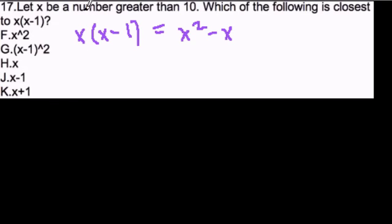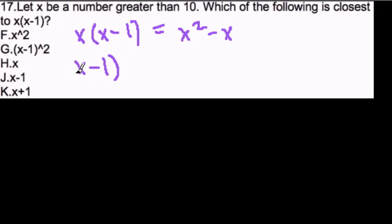Now if we look at our choices here, only one other will require the distributive property, and that's choice G, which says x minus 1 squared.